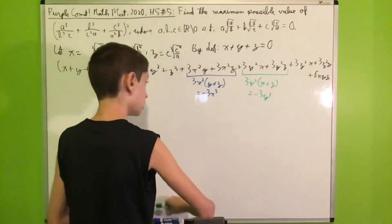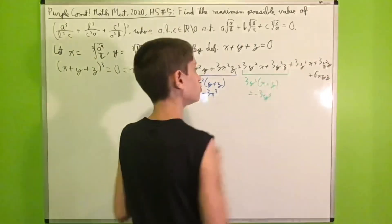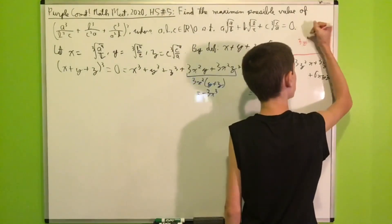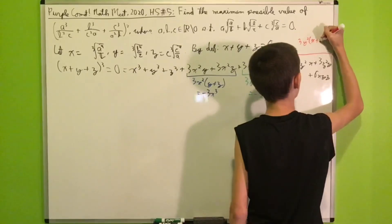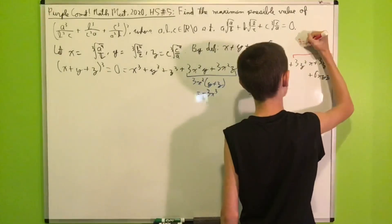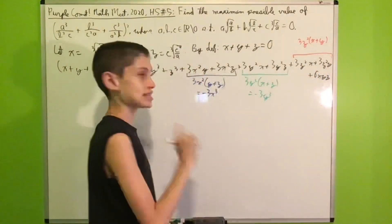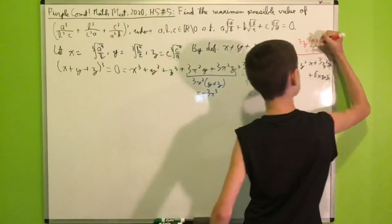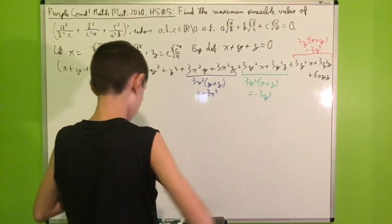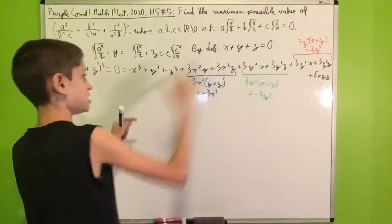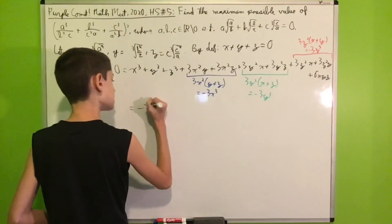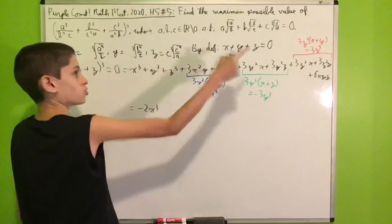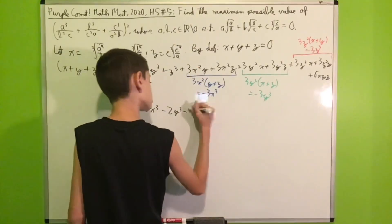For the remaining terms 3z²x + 3z²y, we factor out 3z² to get 3z²(x + y) = −3z³. Collecting like terms, the entire expansion becomes −2x³ − 2y³ − 2z³ + 6xyz = 0.